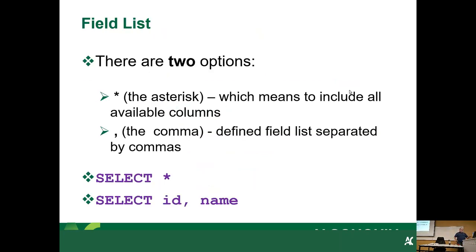So the field list in the SELECT statement gives you two choices. You can use the asterisk, which means include all available columns, or a comma-defined list - a list of fields separated by a comma. Instead of pulling the entire table, you can pull just a few columns. I'm going to explain why SELECT star is only used in development. SELECT star - or SELECT asterisk - is only used in development because in production, SELECT star can be very, very expensive.